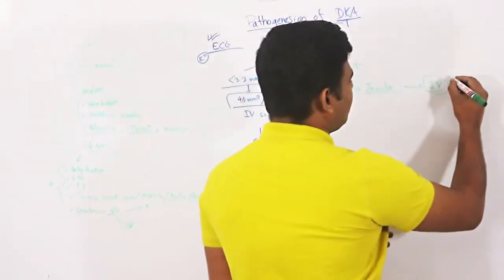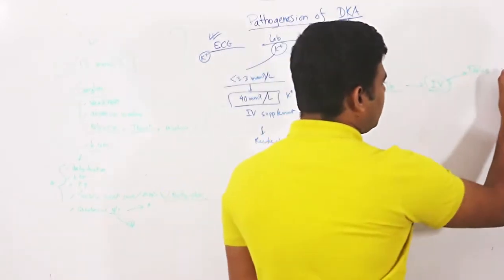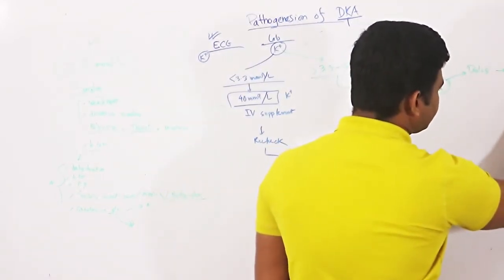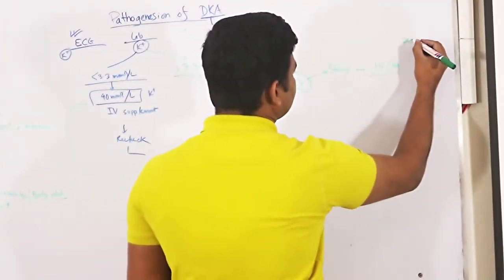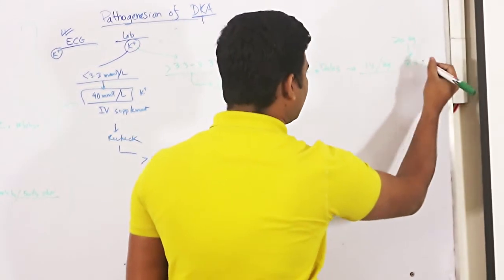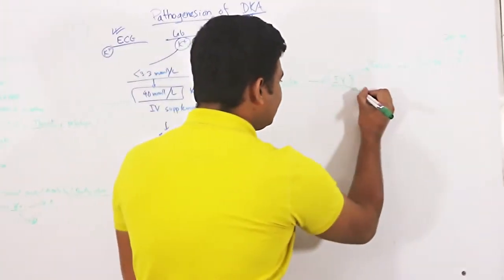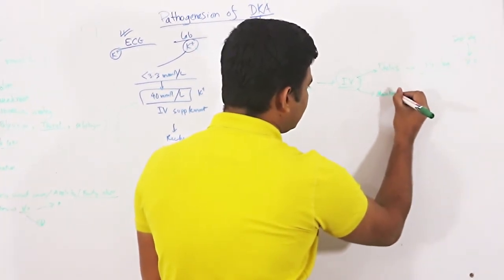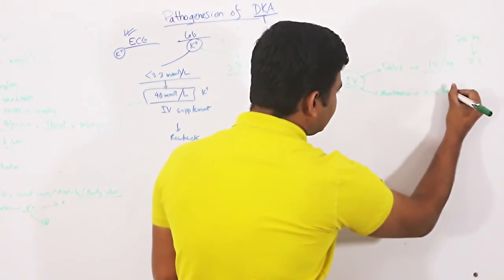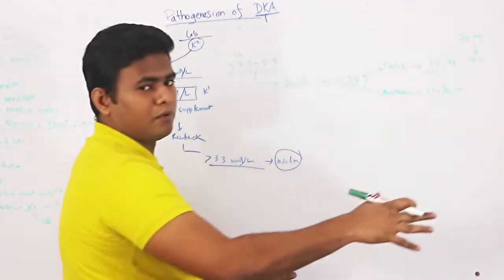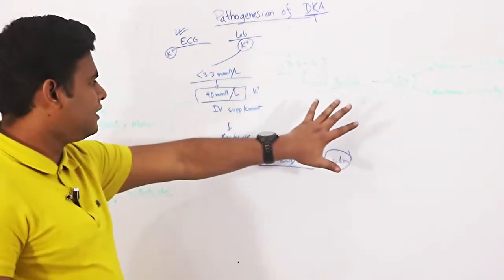First, we give a bolus of insulin — 0.1 unit per kg. For a 70 kg patient, that is 7 units of insulin. Then we give maintenance at 0.1 unit per kg per hour continuously.